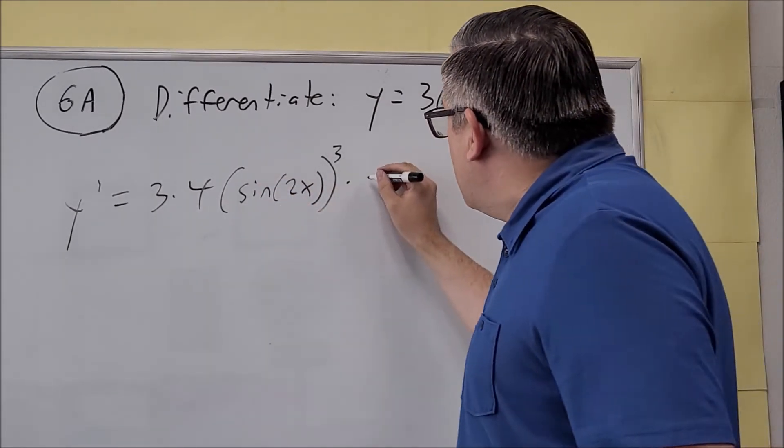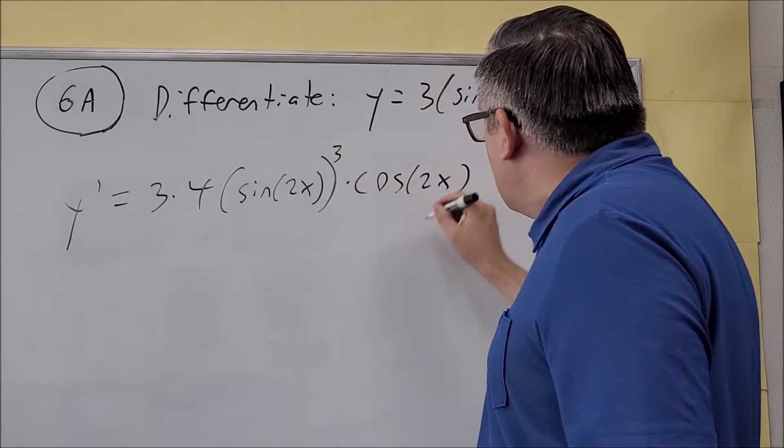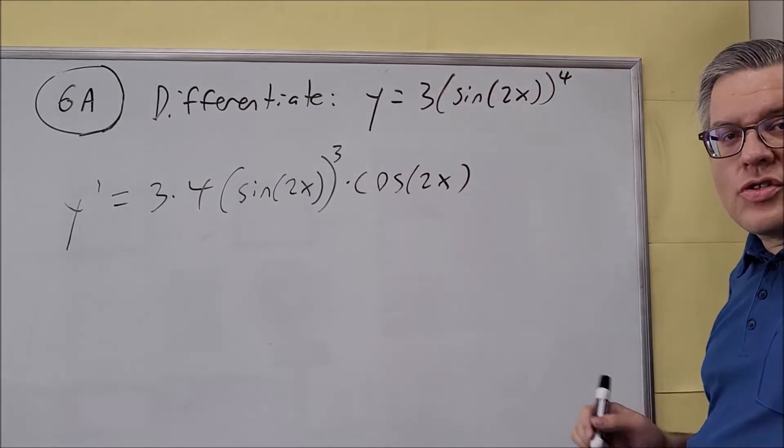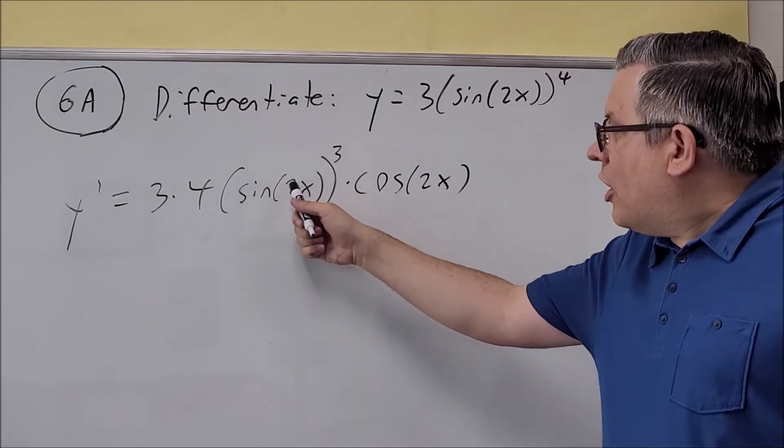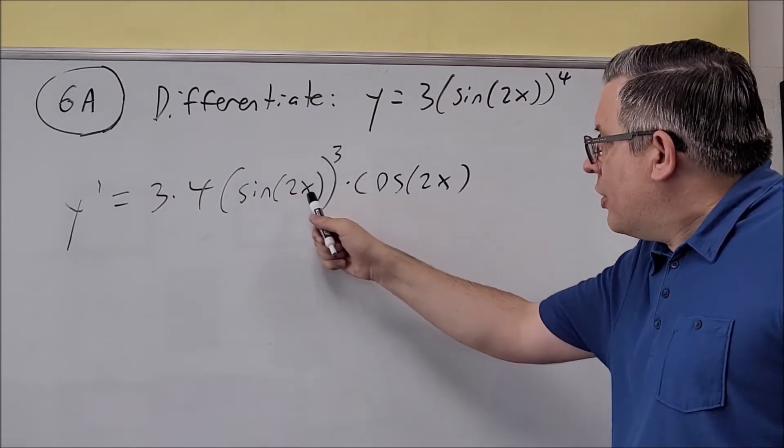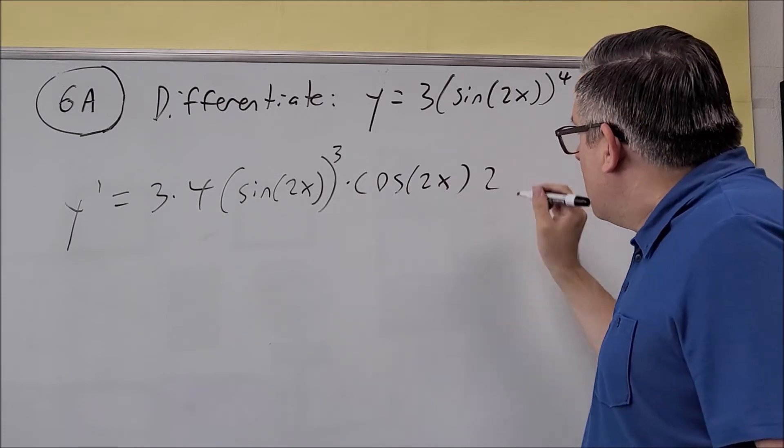The derivative of sine is going to be cosine 2x. But don't forget also, this is the second chain rule you have to do. We do the derivative of the outside, which is cosine, and then the derivative of the inside, which is going to be a 2.